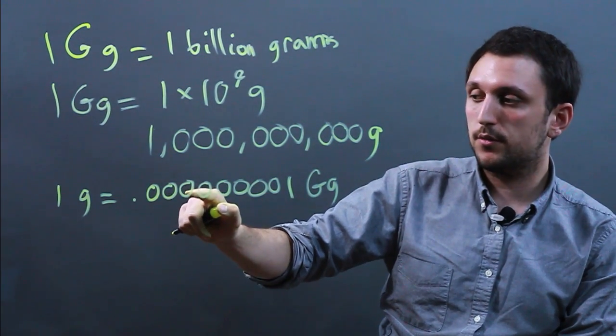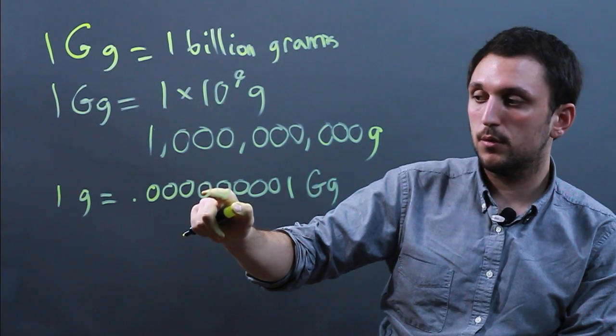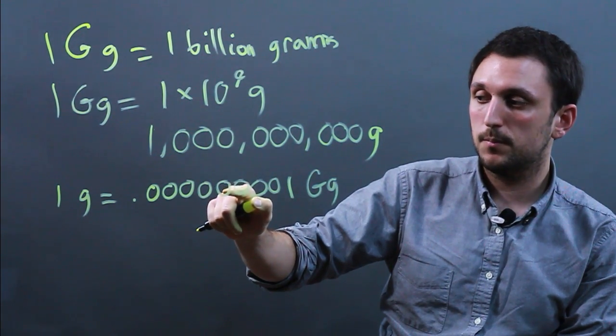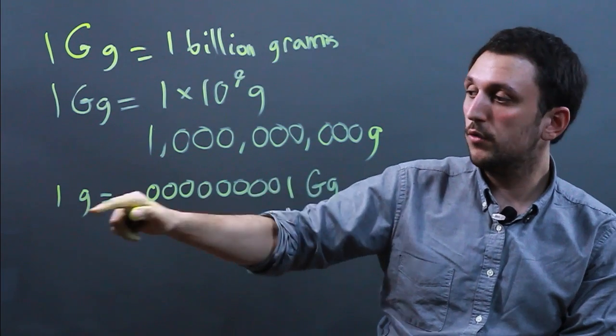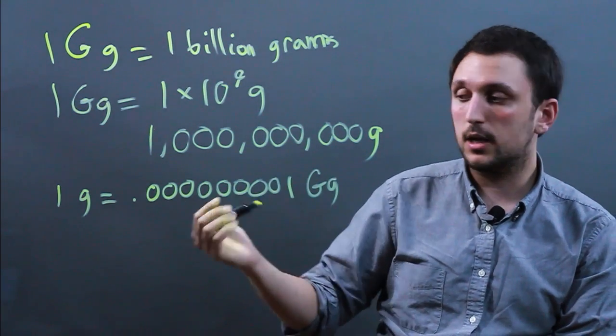So it's tenths, hundredths, thousandths, ten thousandths, hundred thousandths, millionths, ten millionths, hundred millionths, billionths. So one gram equals one billionth of a gigagram.